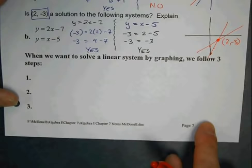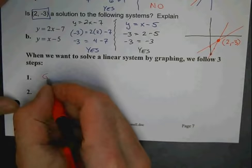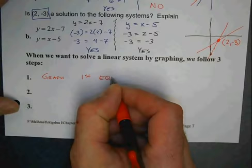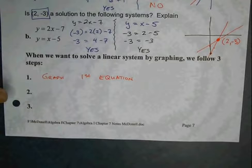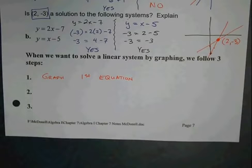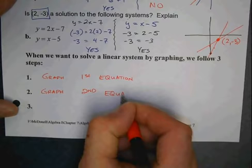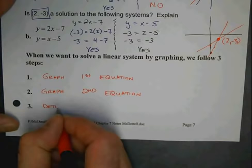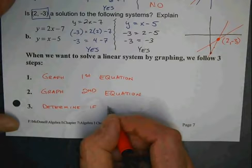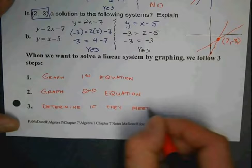We have this question down here. It says, when we want to solve a linear system by graphing we follow three steps. What steps did we follow? Really simple. Graph the first equation. Now, when you're graphing the equation, as we've been emphasizing, remember how we talked about putting points over the whole graph? All the way up and down? Very important that you do that. Second, obviously, is graph the second equation. And then what are we going to analyze? Determine what? Yeah, if they meet. And, if so, where?